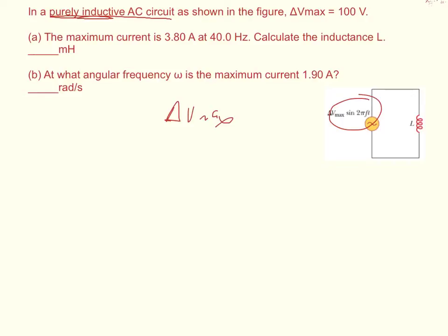So it wants to know what the inductance is, and it wants to know what the angular frequency is. So first part, we're going to use the general case of Ohm's law, delta V max is equal to I max, the maximum current times the impedance Z.